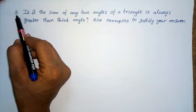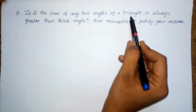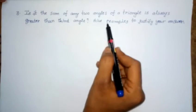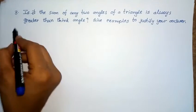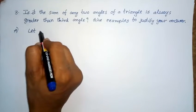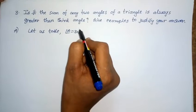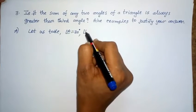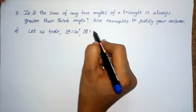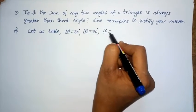Next problem, third: the sum of any two angles of a triangle is always greater than the third angle. Give examples to justify your answer. Let us take three angles of a triangle: angle A equal to 30 degrees, angle B equal to 70 degrees, angle C equal to 80 degrees.